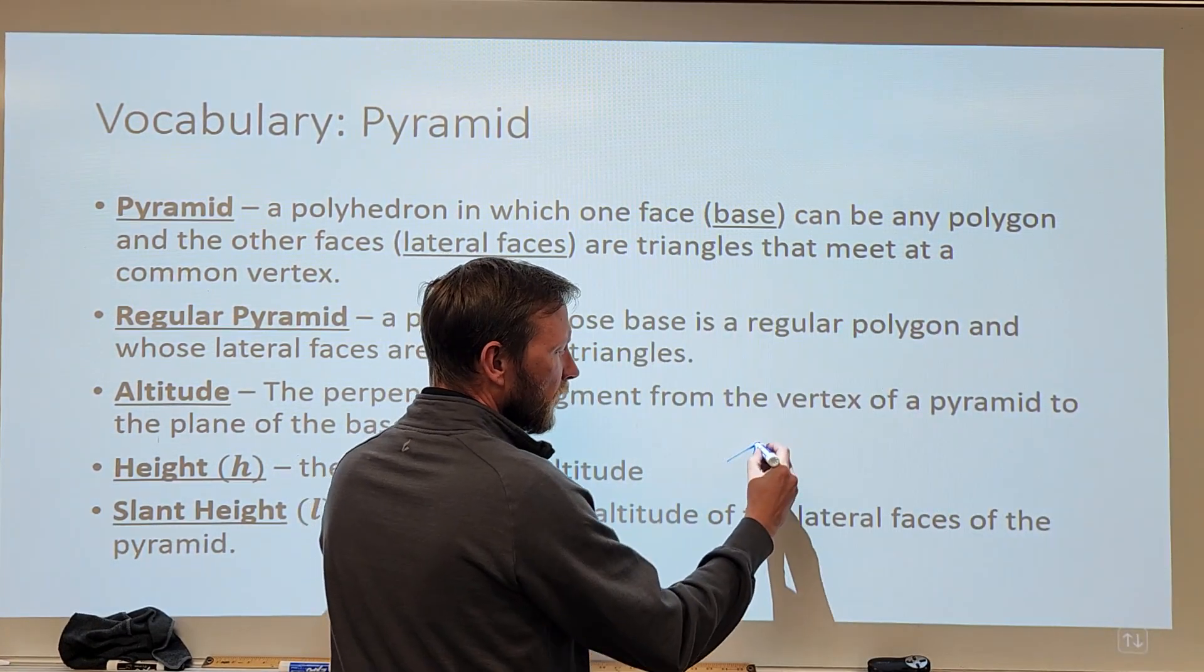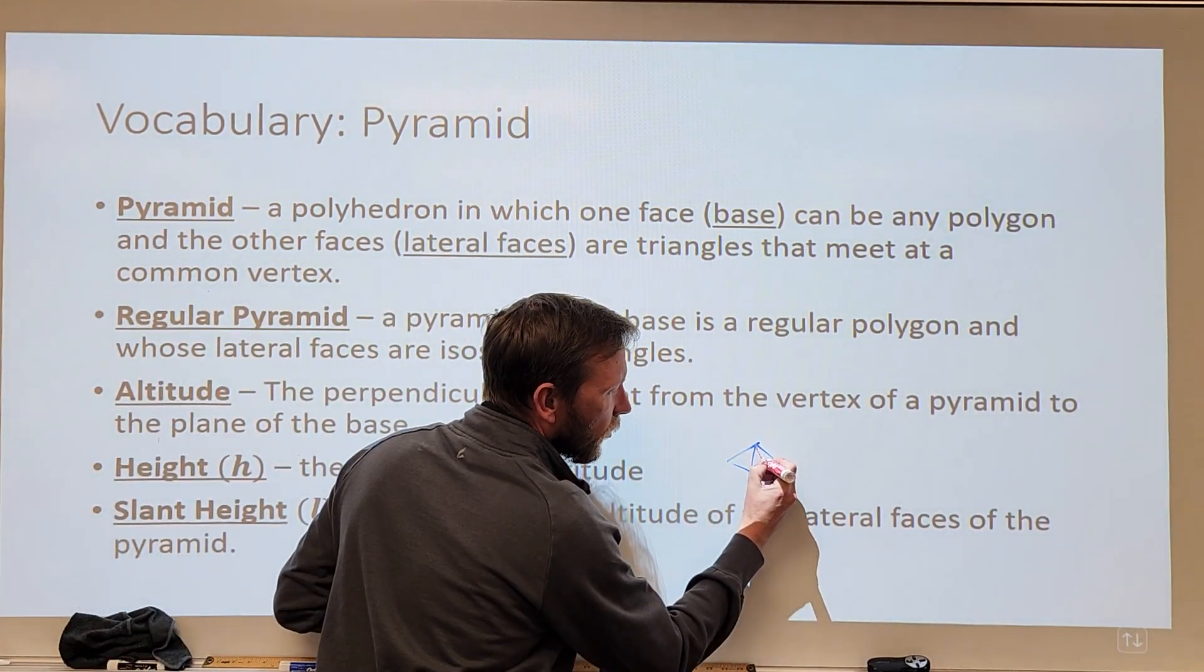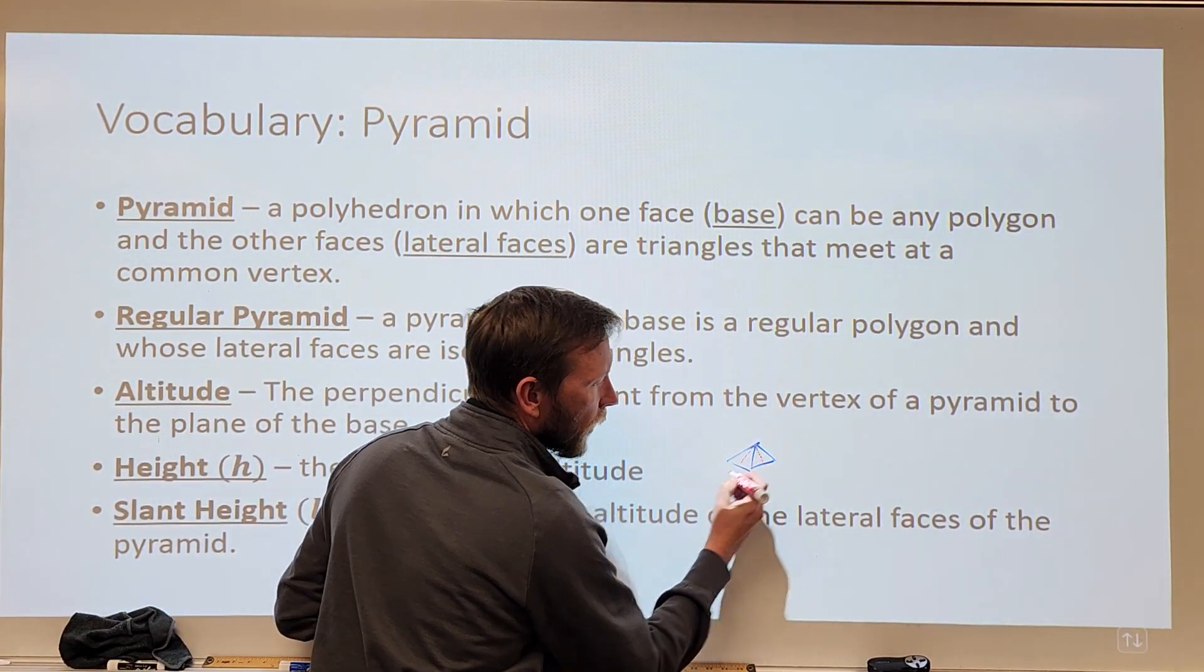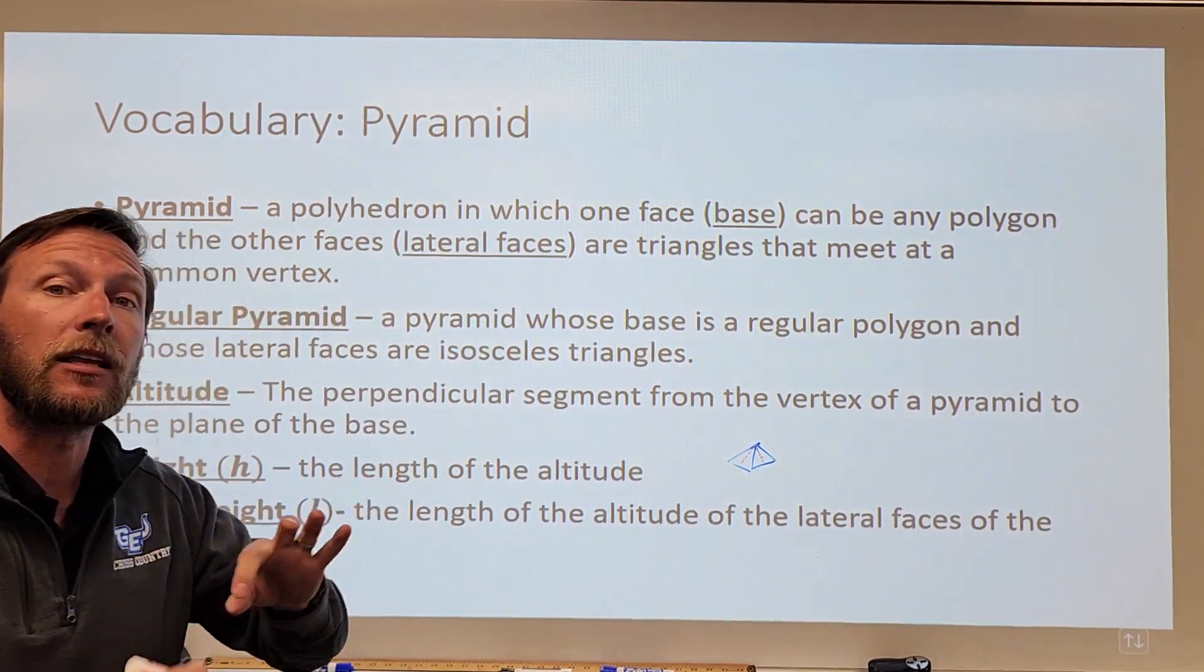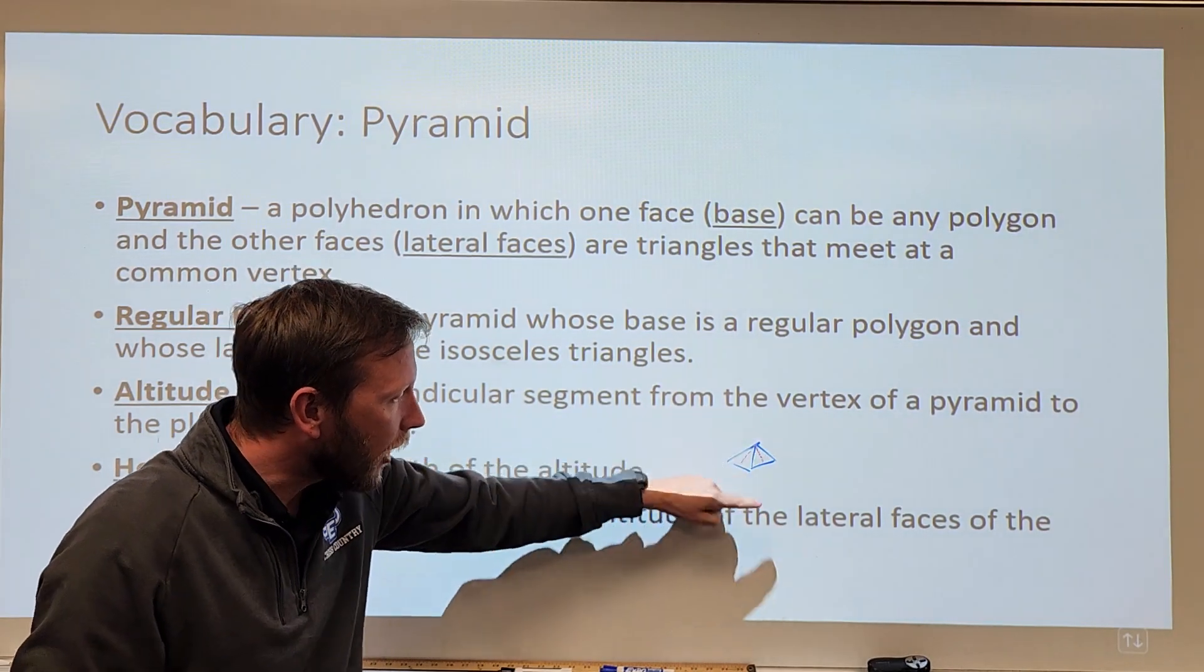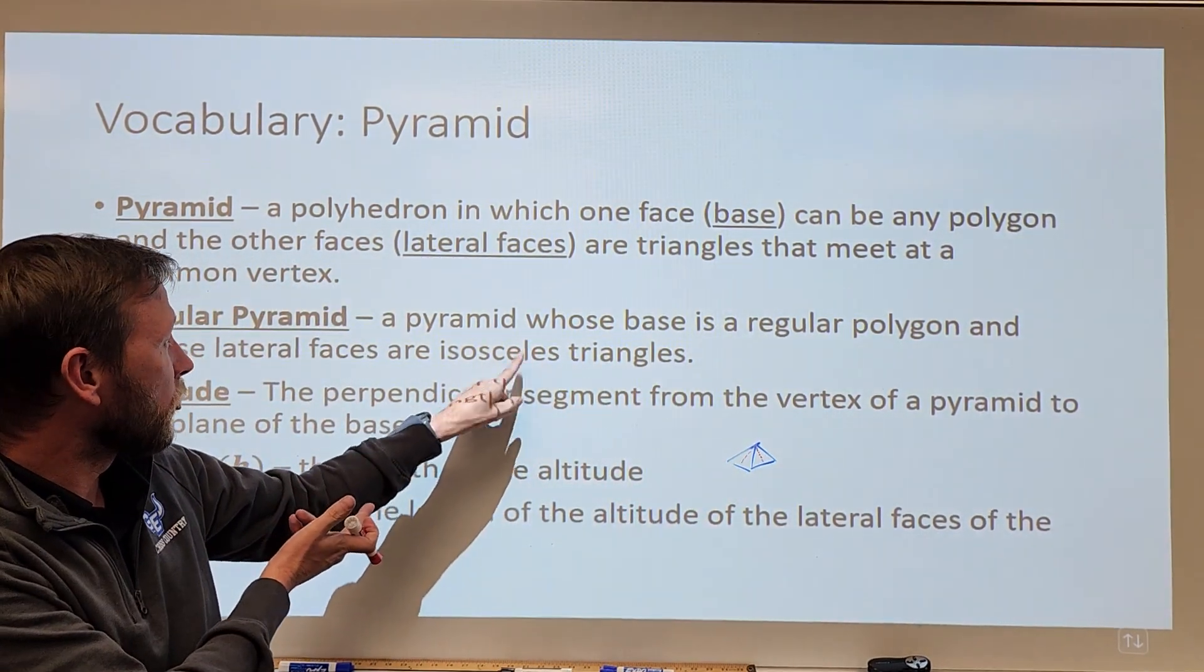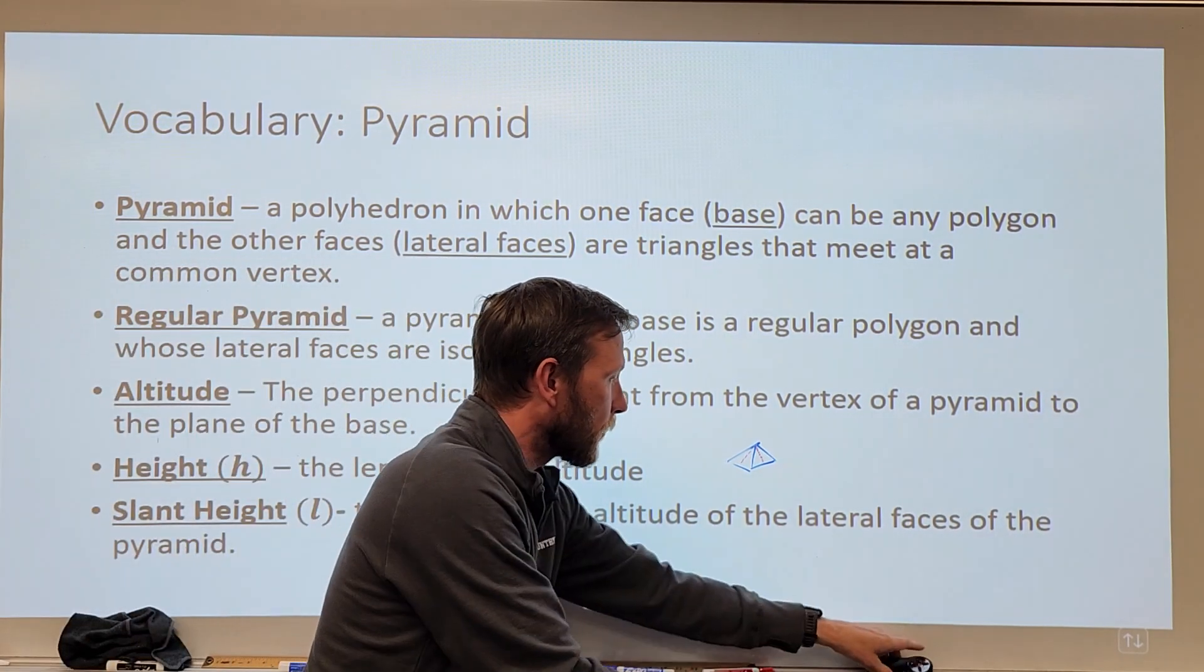So the slant height is a little bit interesting. In a pyramid, if I've got like a square pyramid here, the slant height is actually the height of one of these lateral faces, one of these triangles. So the slant height there is not the length of an edge of this polyhedron or of this pyramid, it is the height of one of those generally isosceles triangles, is what we're going to be dealing with.